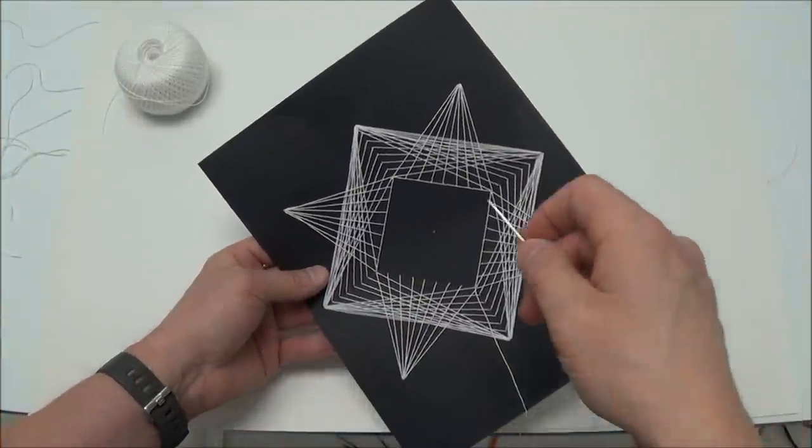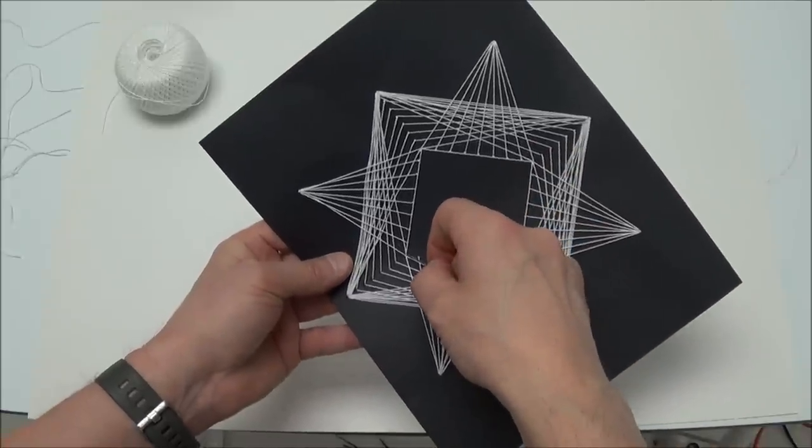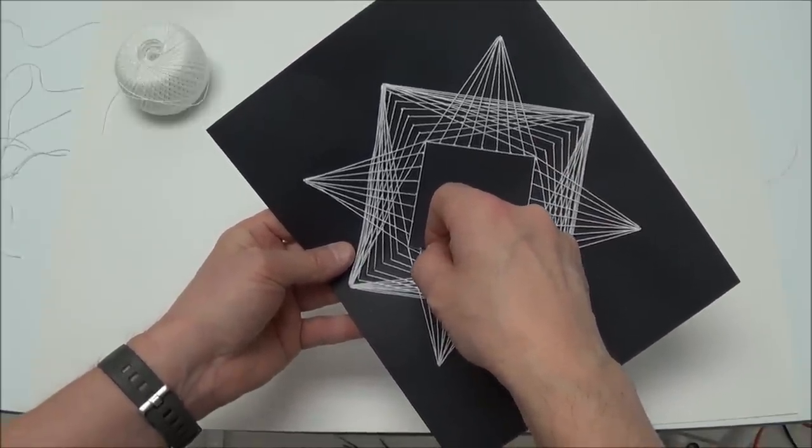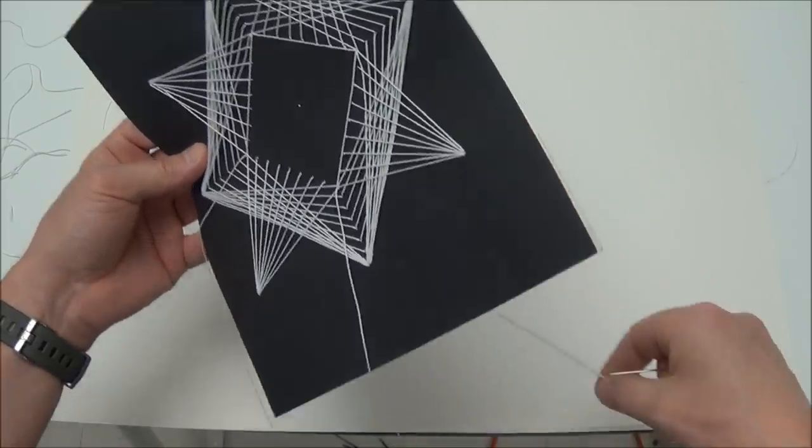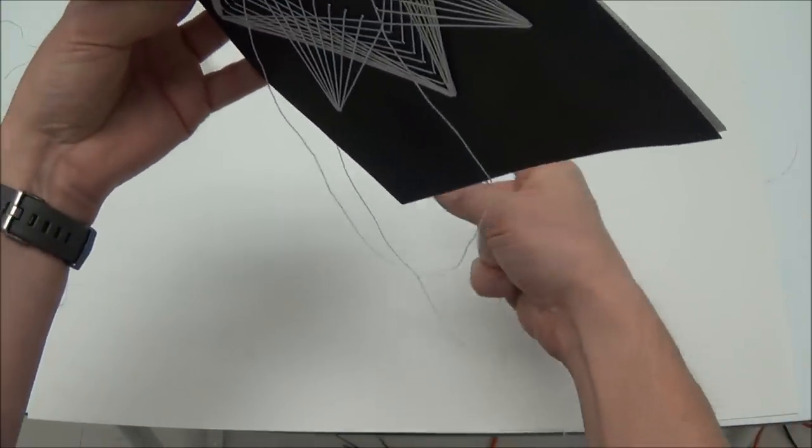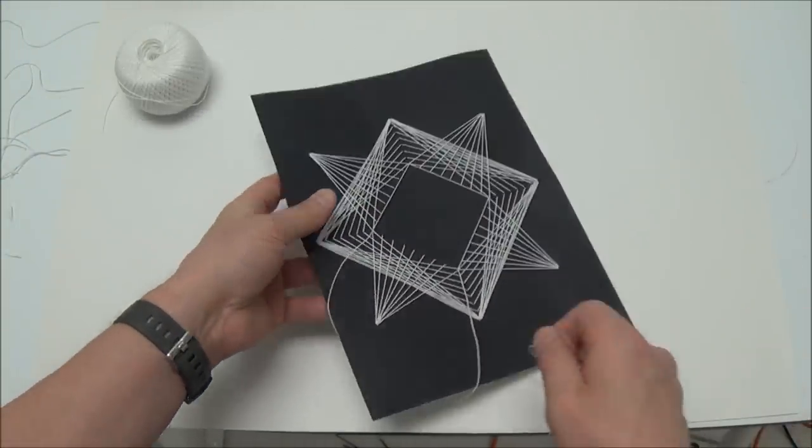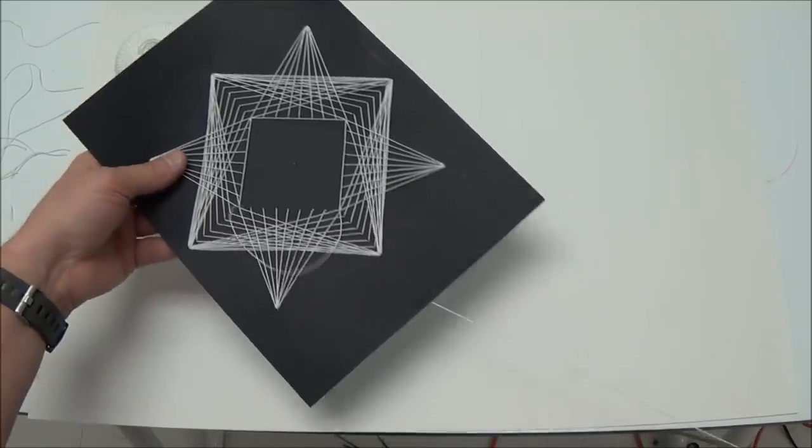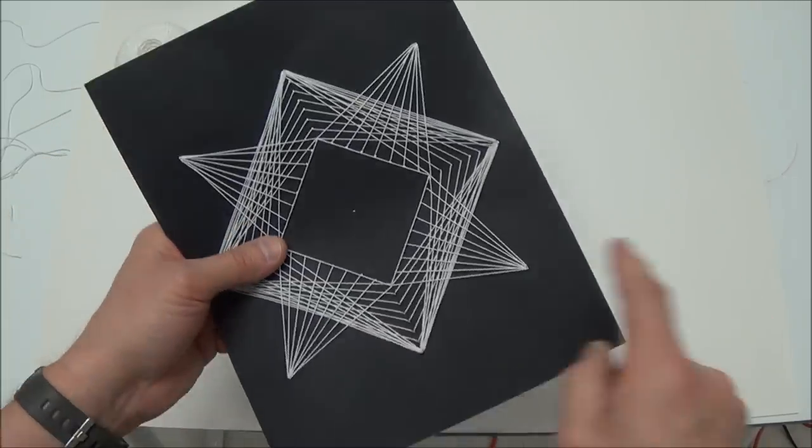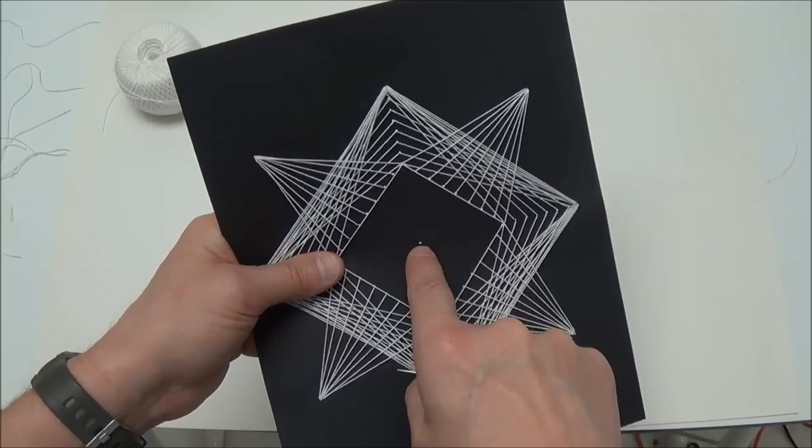String the square in the center. Using the center hole, create a starburst.